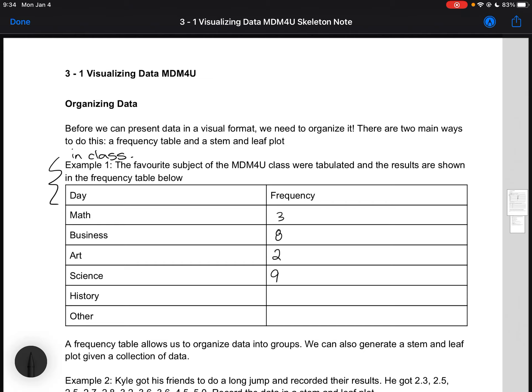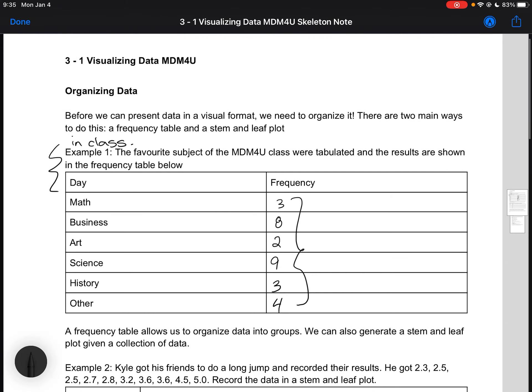We might have nine people that like science. We've got 29 people, so then we'd have three people that liked history and four people that had another subject. So this is an example—this doesn't match our class results, but it is the same idea.